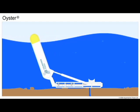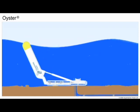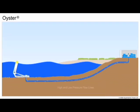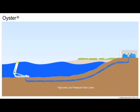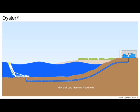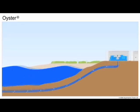This hinged flap, which is almost entirely underwater, sways backward and forward in the waves. The movement of the flap drives two hydraulic pistons which push high-pressure water onshore to drive a conventional hydroelectric turbine.